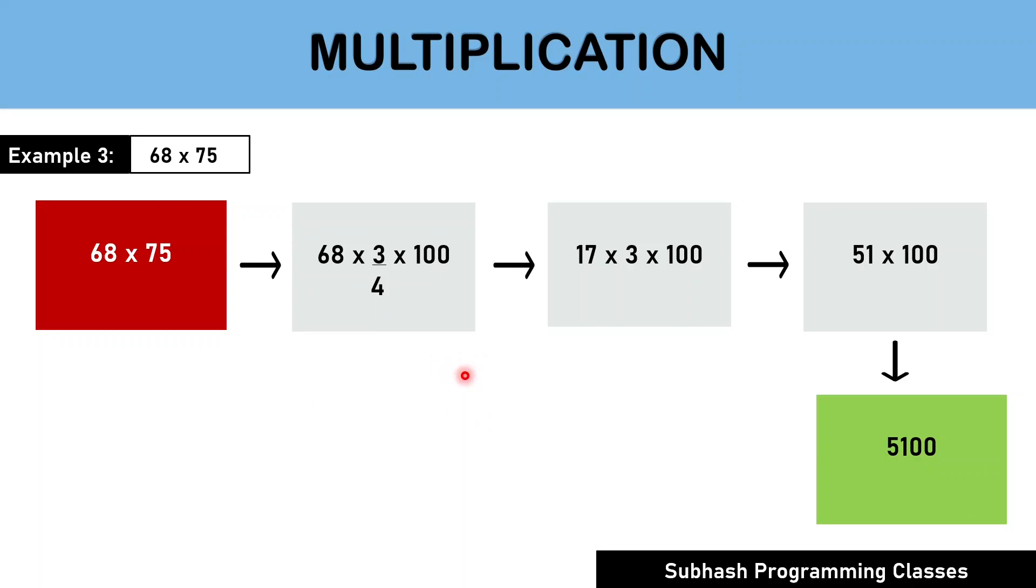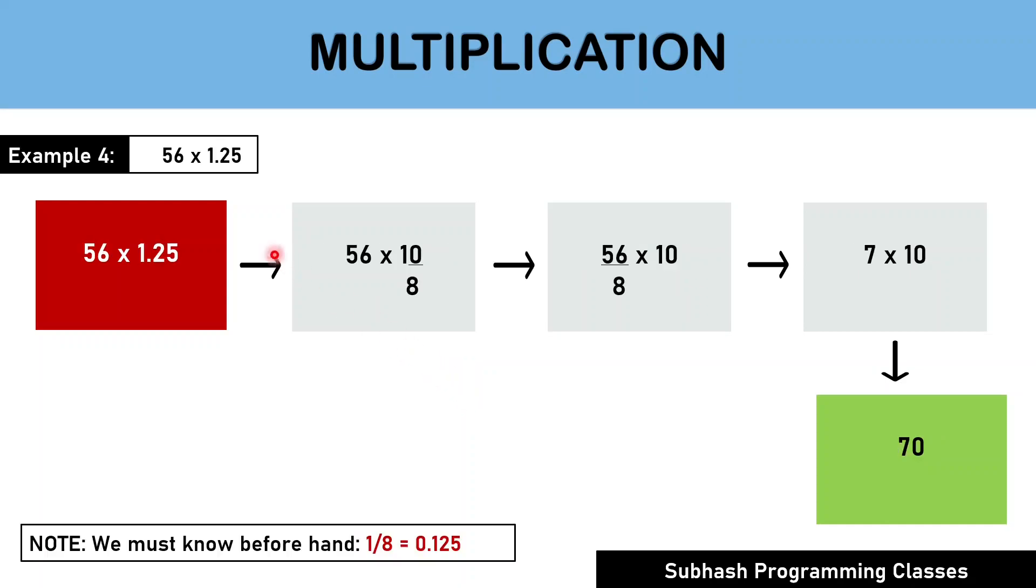Now, let me show you one more interesting calculation. How to solve 56 multiplied by 1.25? This problem needs us to know that 1 divided by 8 is 0.125. And the moment we realize that, then it is clear that 1.25 is nothing but 10 divided by 8. Therefore, 56 multiplied by 1.25 can be easily replaced with 56 multiplied by 10 divided by 8. Next, by dividing 56 by 8, we get the result as 7 which when multiplied by 10 will get the final answer as 70. With this example, it is very evident that when bigger problems are divided into smaller pieces, it becomes easier for our mind to calculate easily and also very quickly.